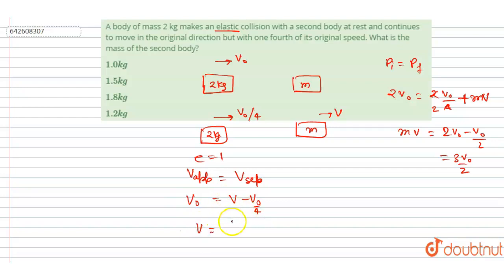5v_naught/4. So just put the value of v now. Just put the value of v now here. v is 5v_naught/4